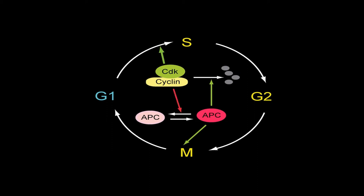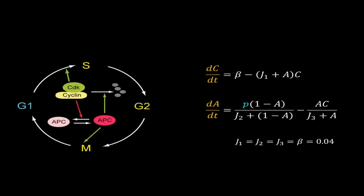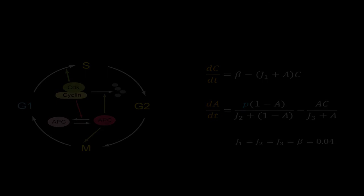On the other hand, cyclin-CDK complex promotes inactivation of APC. So here is our simplified, rather over-simplified model for cell cycle. C is the cyclin-CDK complex and A is the active APC. P is the control parameter for bifurcation analysis. It can be imagined as a molecular cue that triggers activation of APC.